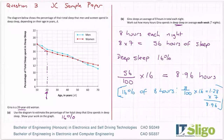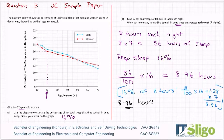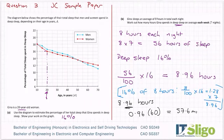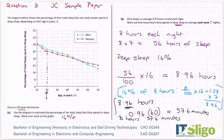It wasn't asked here, but how would you convert 8.96 hours to hours and minutes? There are 60 minutes in an hour, so take 0.96 × 60 = 57.6 minutes. You could write it as 8 hours 57.6 minutes, or to the nearest minute, 8 hours 58 minutes. That's how you convert to hours and minutes if asked.